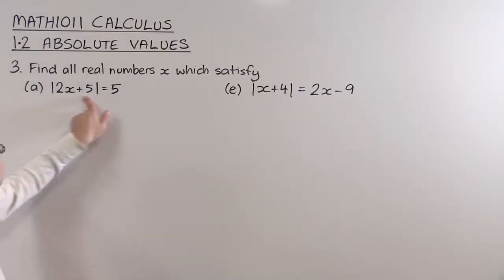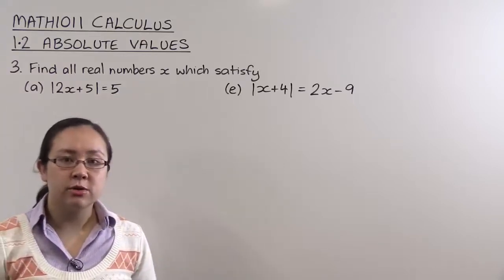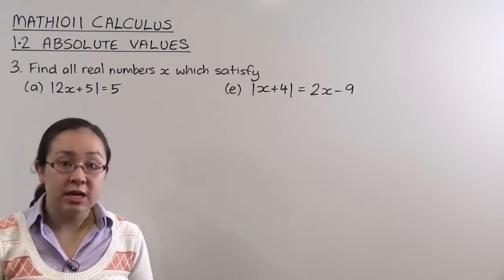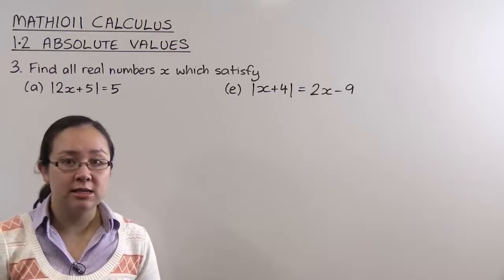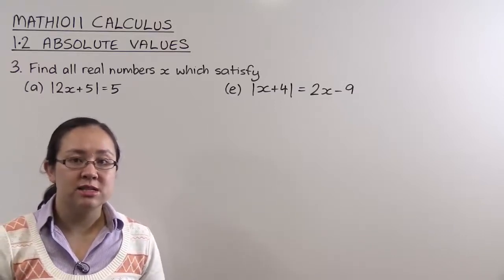For part A, the absolute value of 2x plus 5 is equal to 5. There's lots of ways we could approach the question. We could draw a graph, we could write it as a piecewise function and consider some cases. I'm actually going to solve this question thinking about the absolute value as a distance.